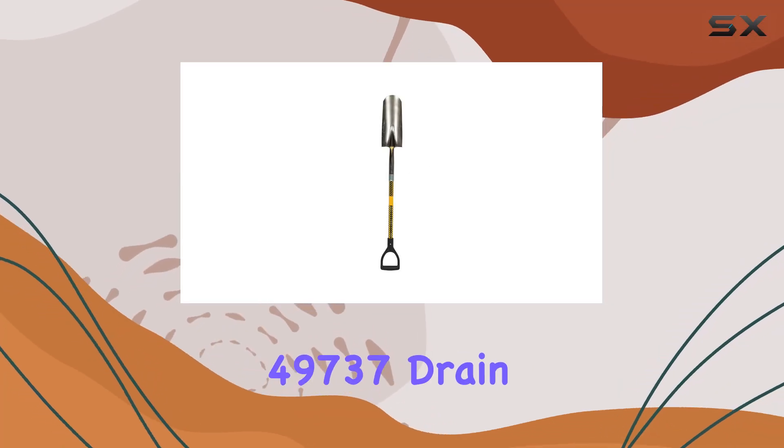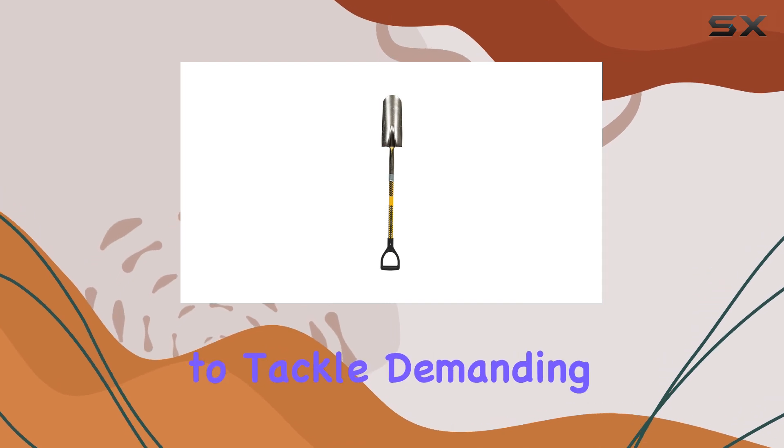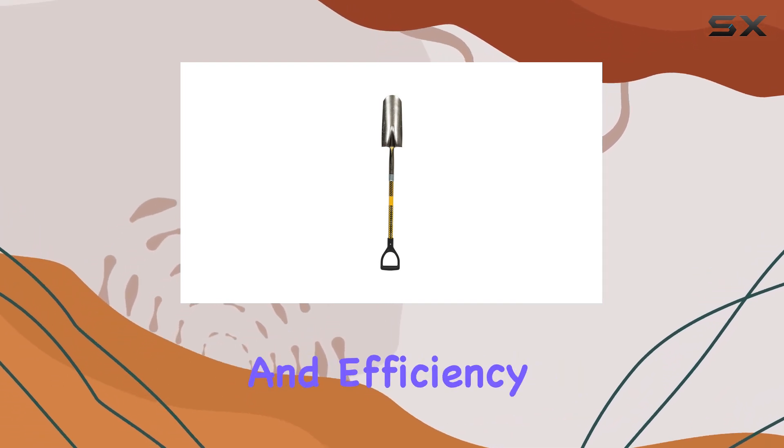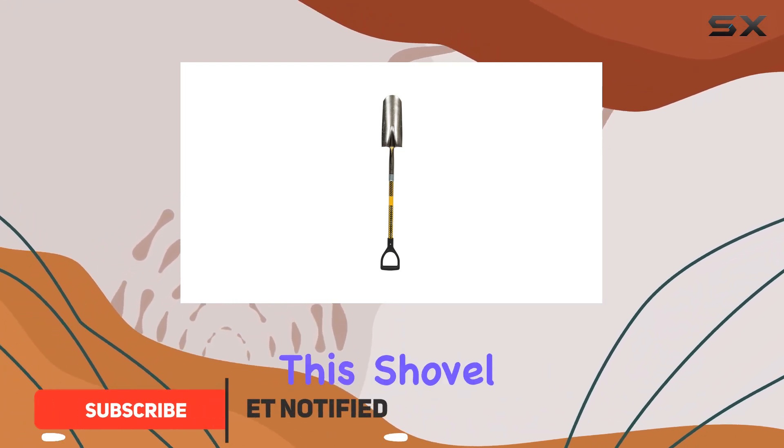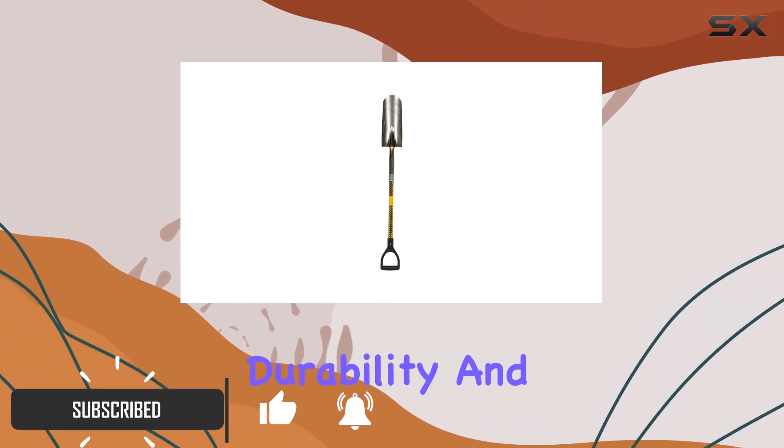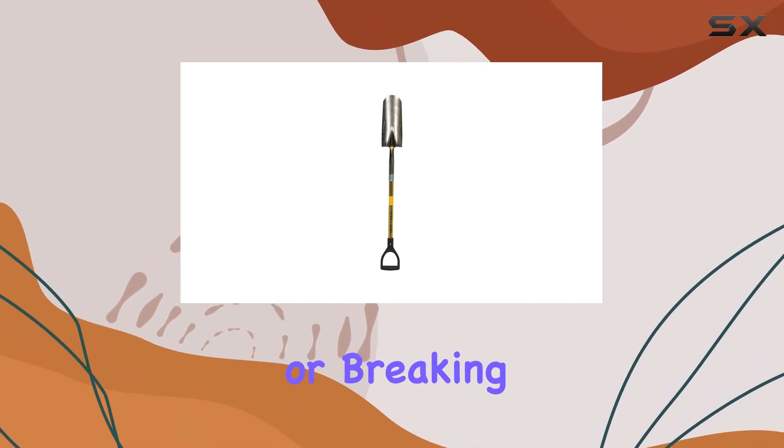The Structron 49737 Drain Spade Shovel is an exceptional tool designed to tackle demanding tasks with ease and efficiency. Constructed from 14-gauge spring steel, this shovel offers impressive durability and strength, ensuring it can withstand heavy-duty use without bending or breaking.